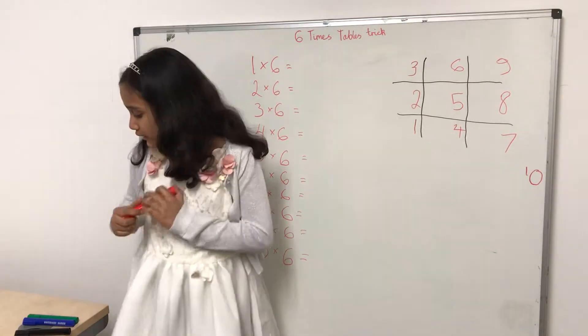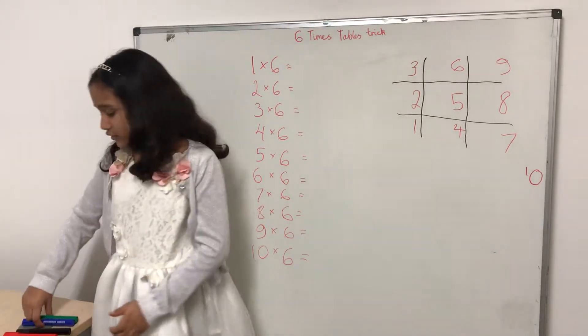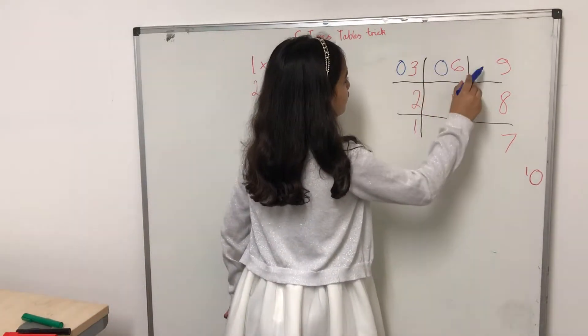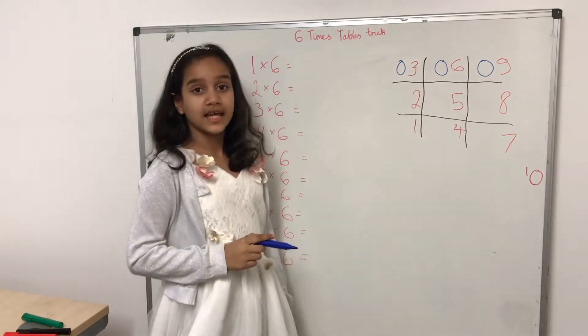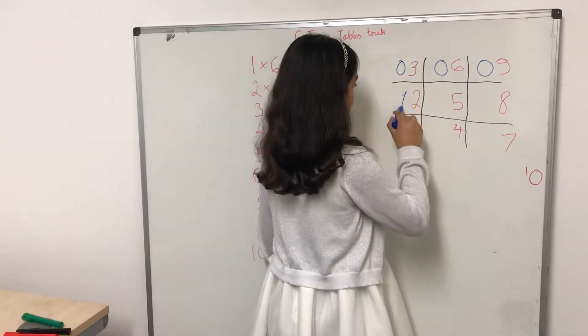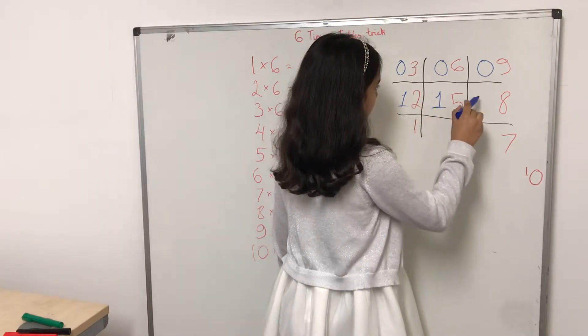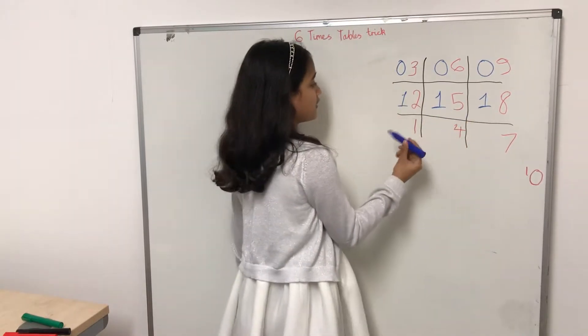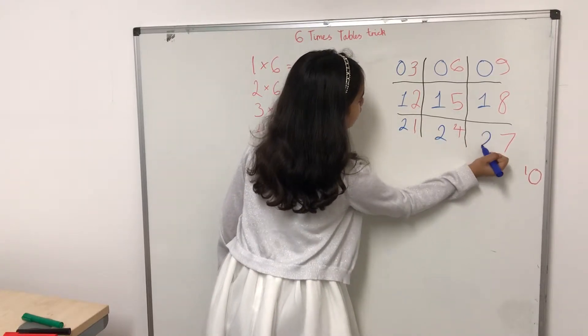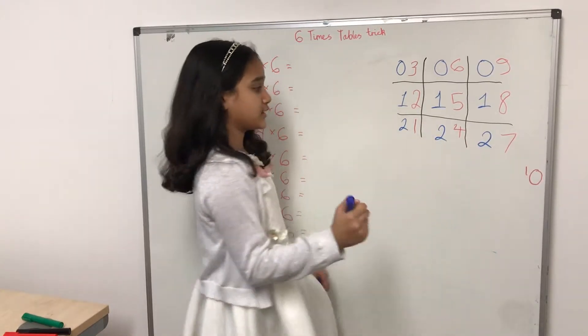Now, in the first row, you're going to put in zeros. In the second row, ones. In the third row, twos.